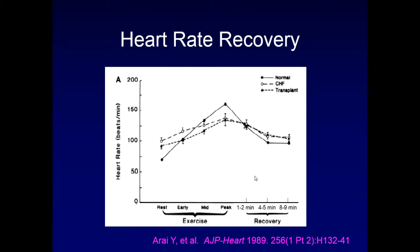A 1989 study compared normal individuals, CHF patients, and post-transplant patients. Normal individuals show a nice increase from a low basal heart rate to a high exercise heart rate and then a very quick recovery over four to five minutes. Individuals with congestive heart failure or who are denervated post-transplant — since the vagus nerve isn't re-hooked after heart transplant — have poor increases in heart rate and very poor decreases afterwards, arguing that CHF patients behave very similarly to transplant patients.